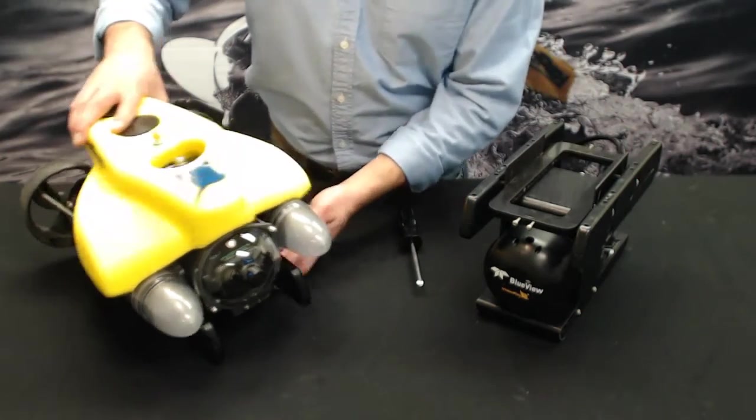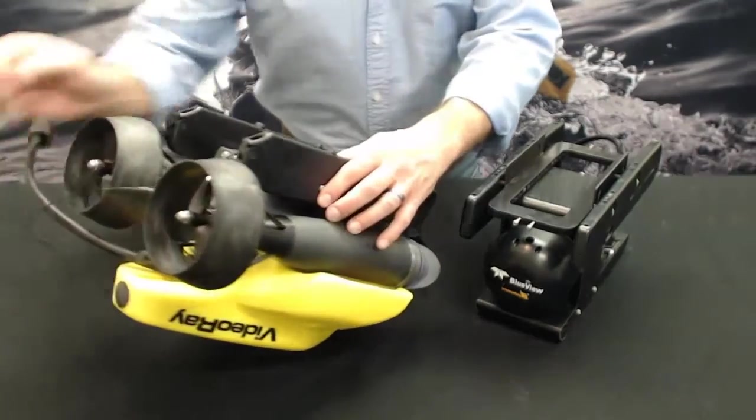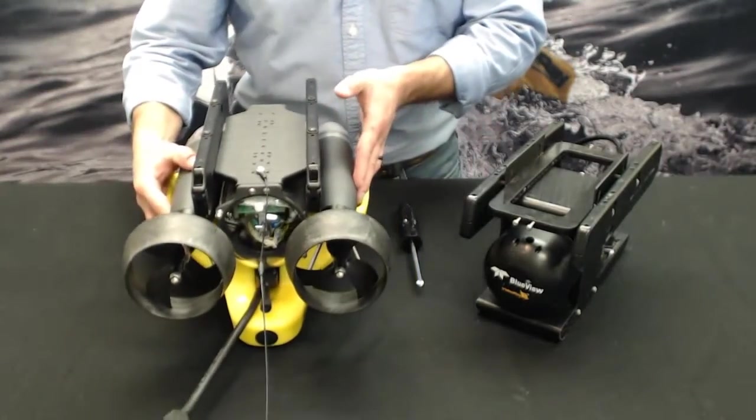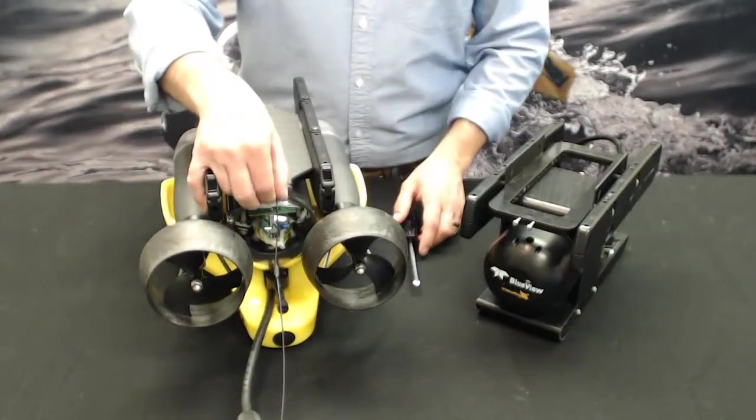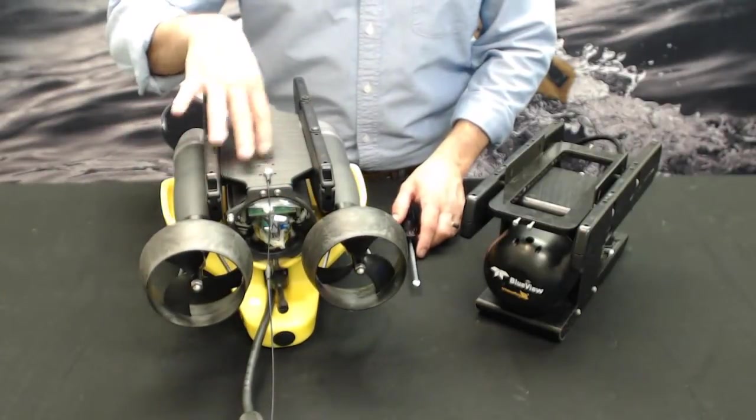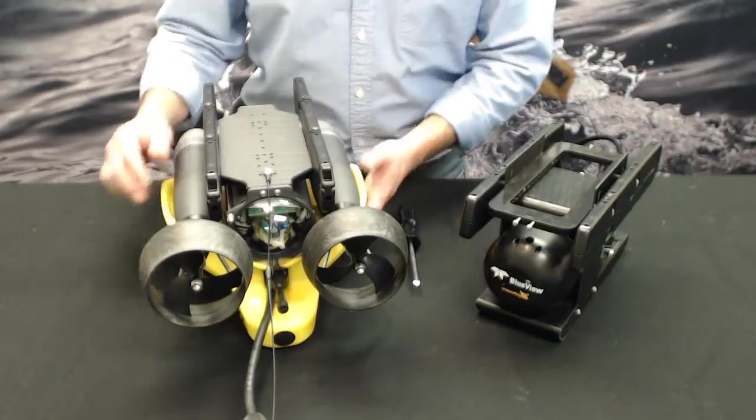First, flip the Pro 4 upside down on a flat surface, preferably with no skid so it doesn't fall. The first move in removing the current ballast skid is to remove the strain relief wire here.